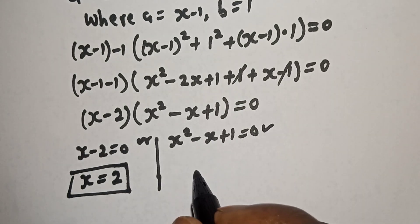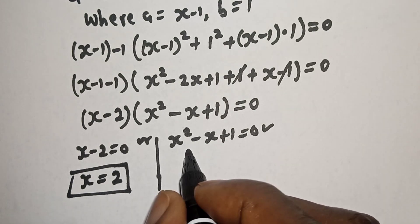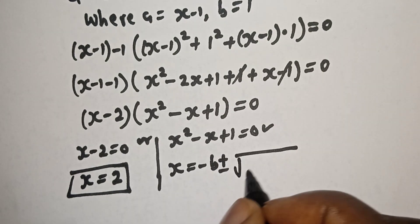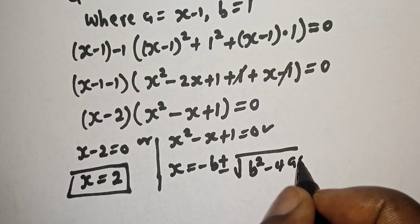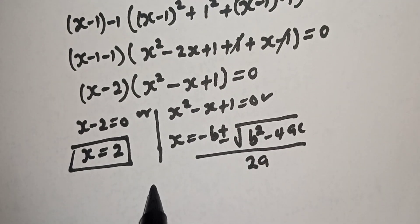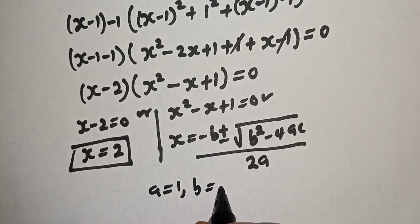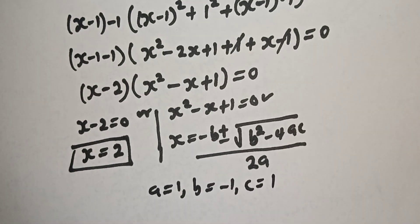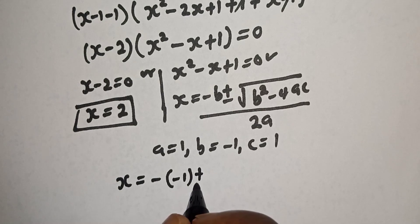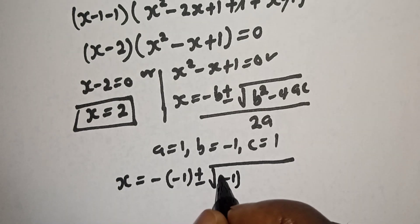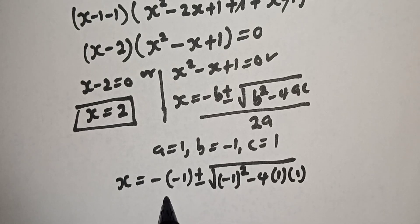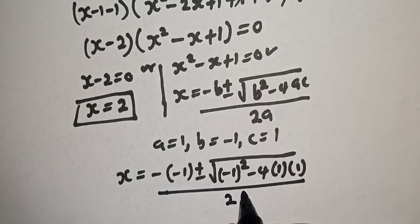The second case is a quadratic equation which can be solved using the quadratic general formula: S is equal to minus B plus or minus square root of B squared minus 4AC, over 2A. From this quadratic equation, A is equal to 1, B is equal to minus 1, and C is equal to 1. Let's substitute.